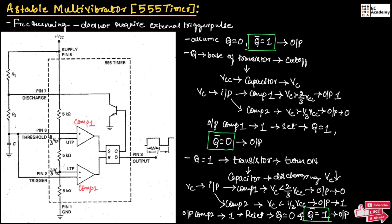Let us summarize the operation. Initially, we assume Q equals 0. Since Q is equal to 0, Q bar will be equal to 1, so we get a high state at the output. Since Q equals 0 and is connected to the base of the transistor, the transistor will turn off. Hence whatever power supply we connect to the circuit will appear across capacitor C, and capacitor C will start charging. The voltage across the capacitor will act as input to both comparator 1 and comparator 2.